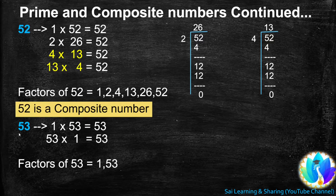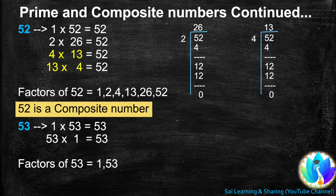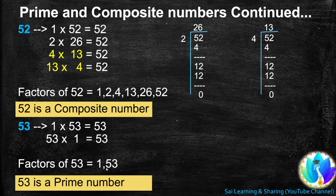Next, 53. 1 is a factor of every number, so 1 times 53 equals 53. 53 is not a multiple of 2, and 53 is not a multiple of 3. There is no other combination in the tables. At last, 53 times 1 equals 53. Factors of 53: 1 and 53. Since 53 has only 2 factors, 53 is a prime number.